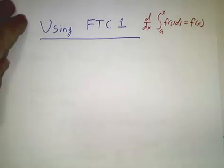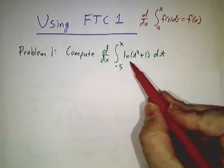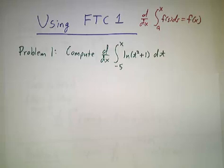So, our first problem is to compute the derivative of the integral from -5 to x of ln(t^2+1) dt. Oh boy, what a mess.